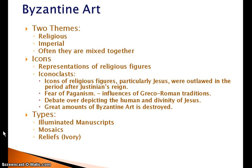Literacy rates were still very low during this time period — they do not become very high until very recent in human history. So having an illuminated manuscript able to tell a story is going to be necessary and important because most people can't read the text. You also have mosaics — small pieces of treated glass, sometimes stone, pieced together to reveal long-standing images. And then you also have carved reliefs, typically out of ivory, but they could also be marble or other materials.